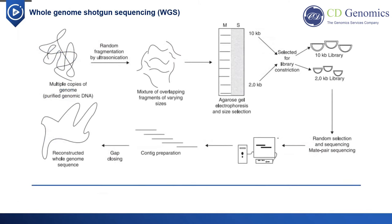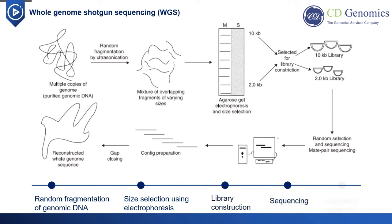Whole genome shotgun sequencing generally involves five steps: random fragmentation of genomic DNA, size selection using electrophoresis, library construction, sequencing, and genome assembly. Two different sizes of DNA fragments are selected from the agarose gel: longer inserts of 2–2.5 kilobases, and short inserts of 0.5–1.2 kilobases. While the long inserts are cloned in phage or cosmid vectors, the short inserts are cloned in plasmid vectors. The short insert clone library is used for sequencing from both ends. Since large numbers of clones are sequenced, each genome will be covered more than 10 times. Long insert clones can be used to increase the efficiency of genome assembly.